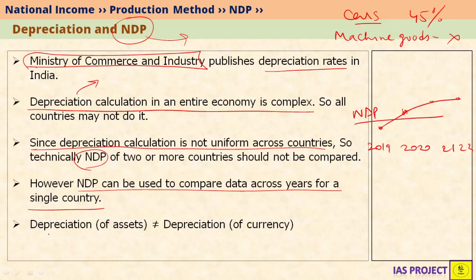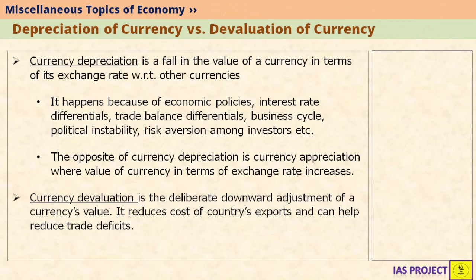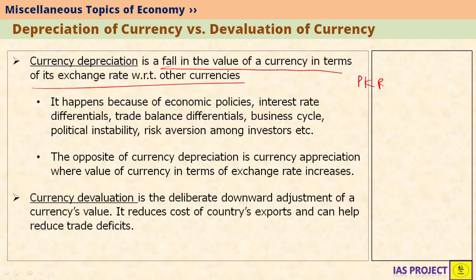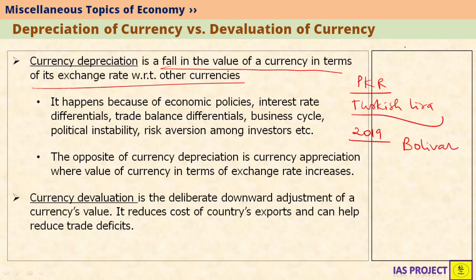We must also remember that there are two kinds of depreciation discussed in economics. One is depreciation of assets, which is consumption of fixed capital as just discussed. The other is depreciation of currency. Currency depreciation is a fall in the value of a currency in terms of its exchange rate with other currencies. For example, the Pakistani Rupee has been falling continuously due to recent economic situations, and similarly the Turkish Lira and, in 2019, the Venezuelan Bolivar — all have suffered depreciation, meaning their value has decreased in comparison to currencies like the US dollar.